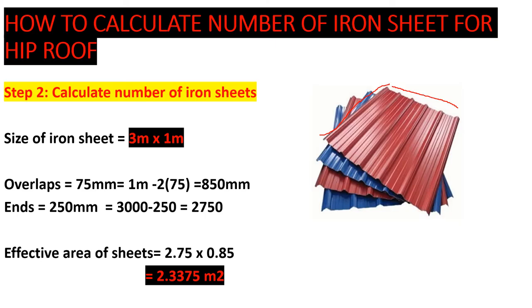For overlaps: when you place one iron sheet next to another, it overlaps by 75 millimeters. The ends that protrude outside are 250 millimeters. So for the width: 1000 mm minus 150 mm (total overlap) = 850 mm effective width. For the length: 3000 mm minus 250 mm (end) = 2750 mm effective length. The effective area of each iron sheet is 2.75 × 0.85 = 2.3375 square meters.